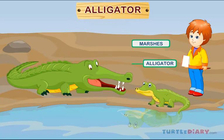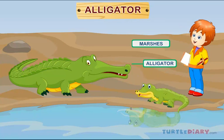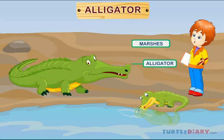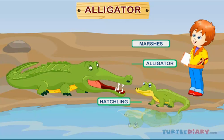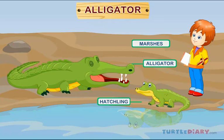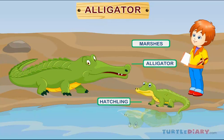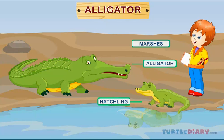Alligator. This is an alligator. A baby alligator is called a hatchling. Alligators live in marshes, rivers, and swamps.